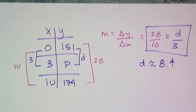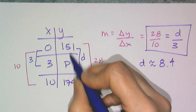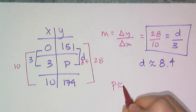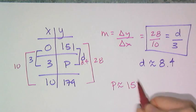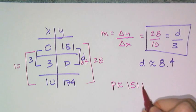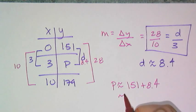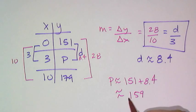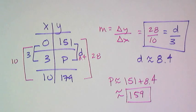Now I have a proportion that I can solve. So that meant that the change between 151 and p is 8.4 approximately. And that means that if I want to approximate p, I can take 151 and add on the 8.4 to get that p is approximately equal to 159. You don't really care about that .4 because it's an approximation.